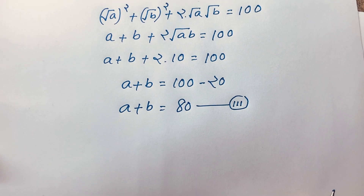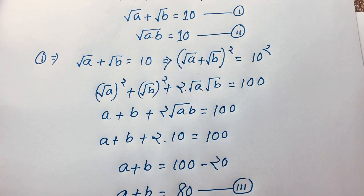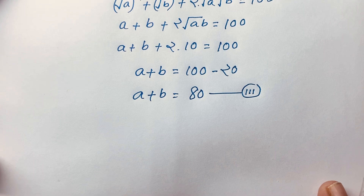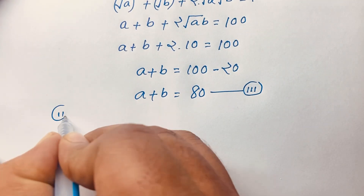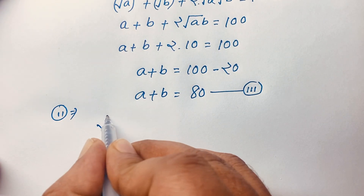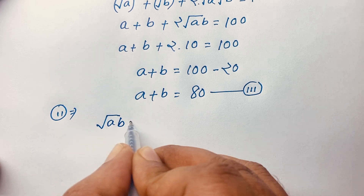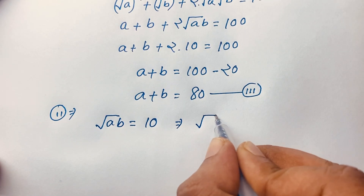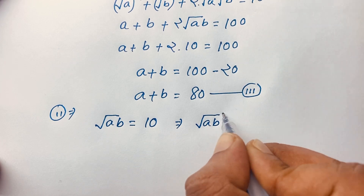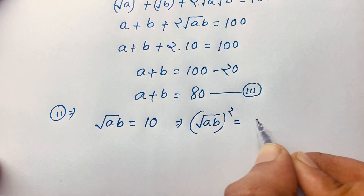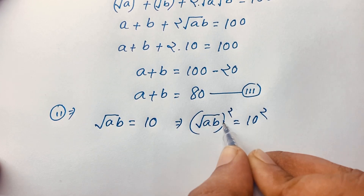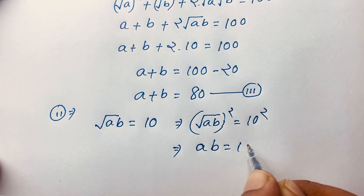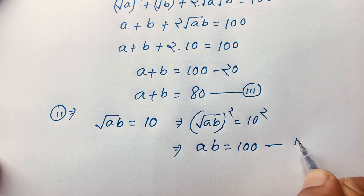Now our second equation is square root of ab equals 10. If I take our second equation and use both sides whole square, then the square root cancels and we get ab equals 100. This is our fourth equation.